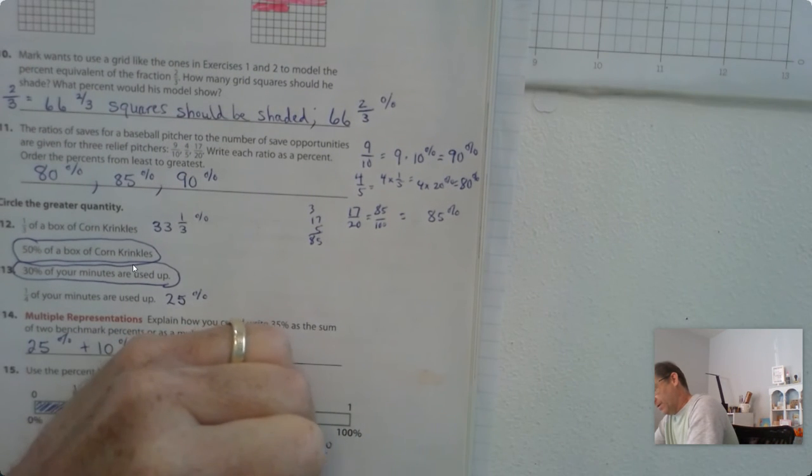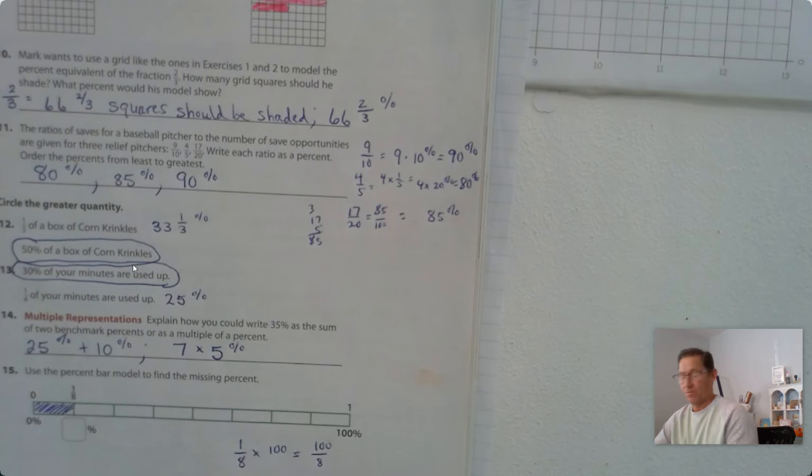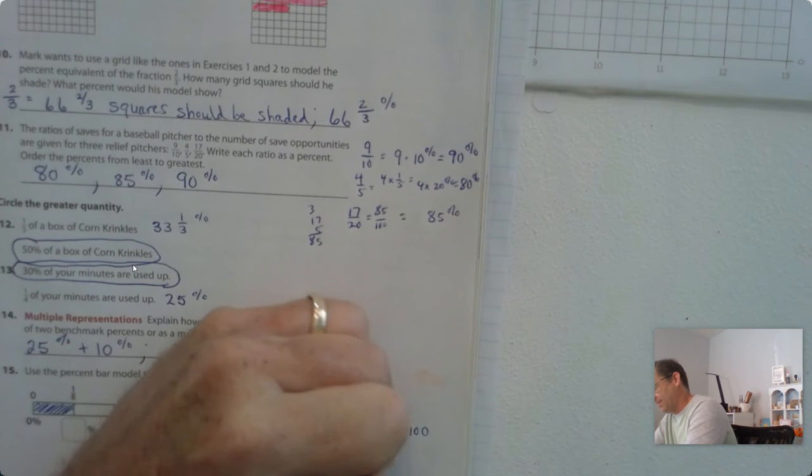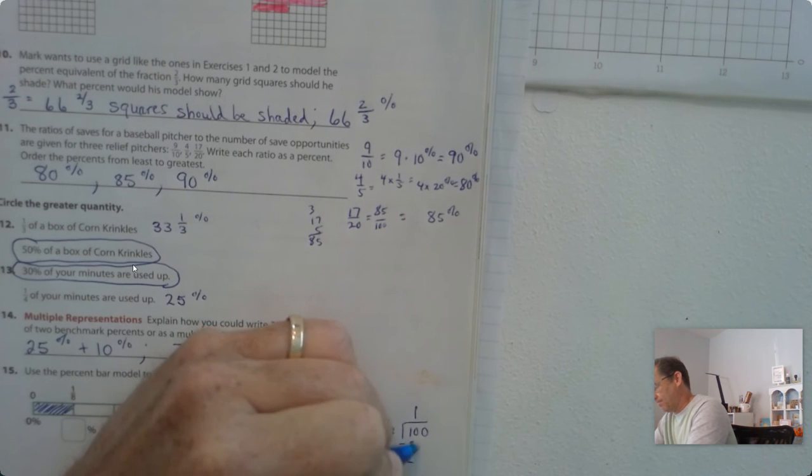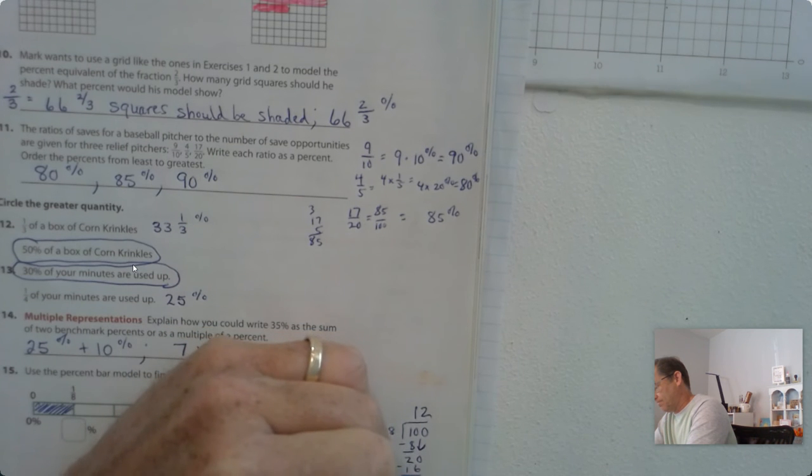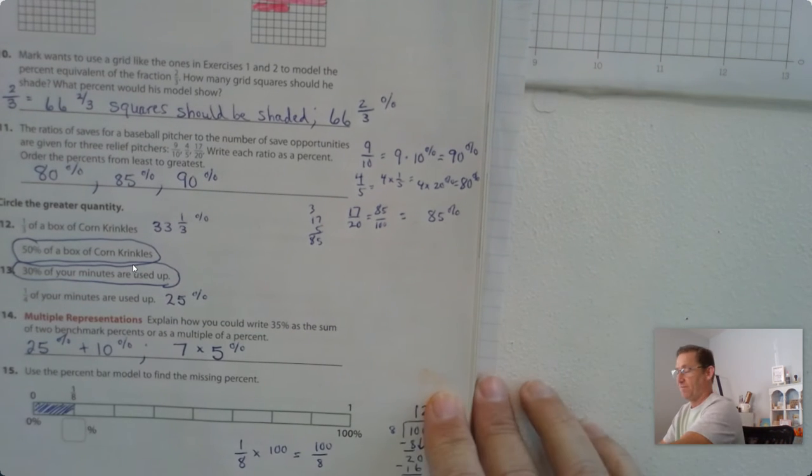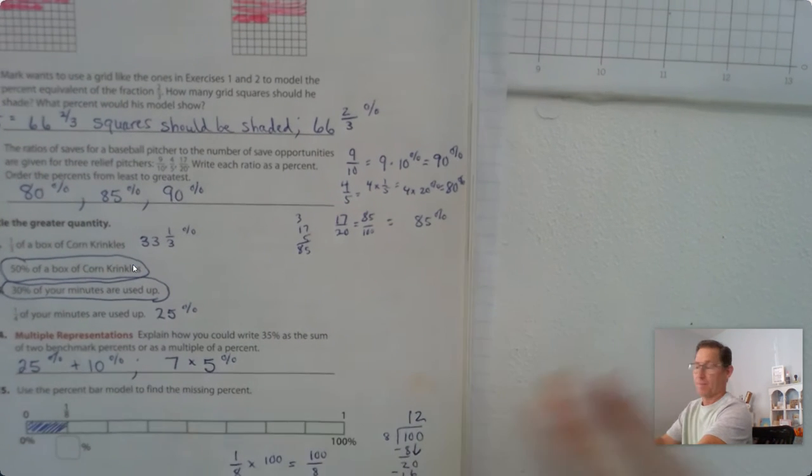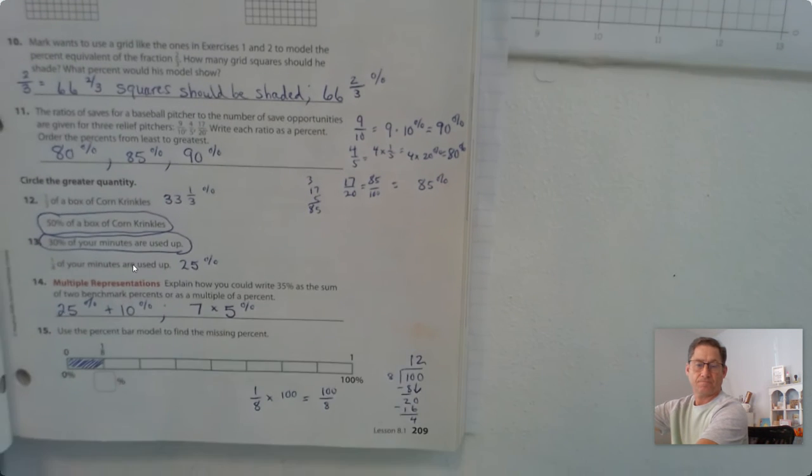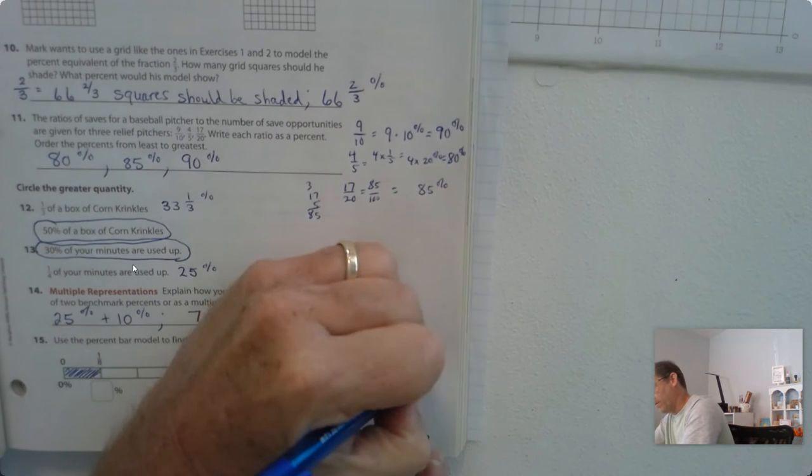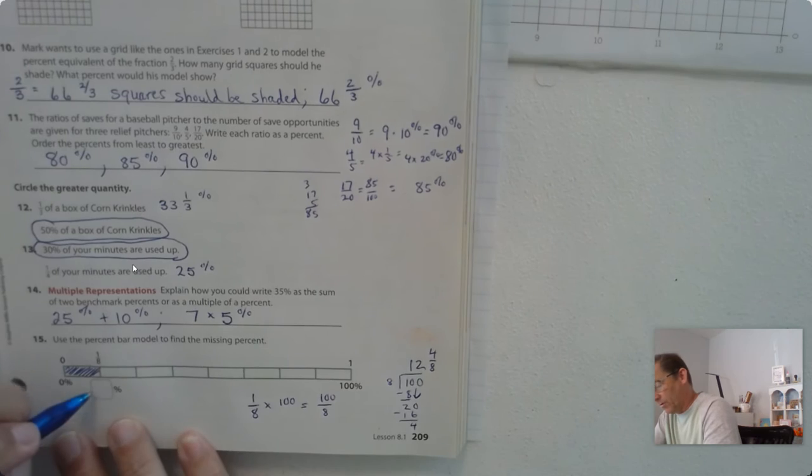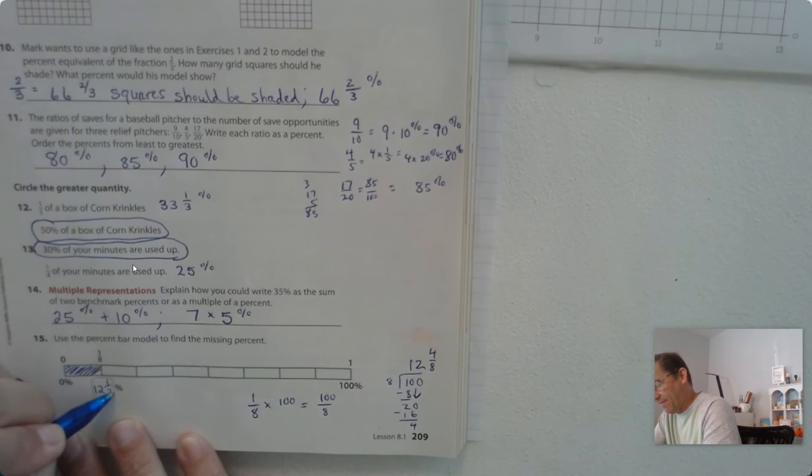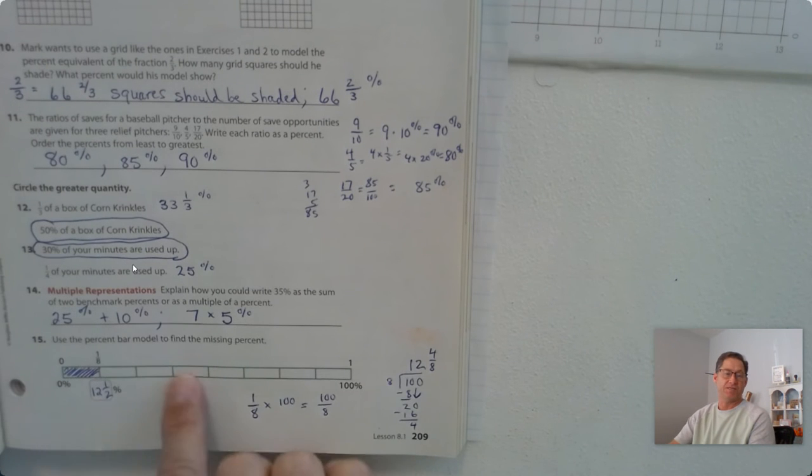So we have 100 over eight. Well, we can divide that to figure out how much each eighth is worth. So we have a remainder of four. We have 12 and four-eighths, which is the same as 12 and a half. So it would be 12 and a half percent for each mark.